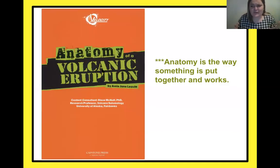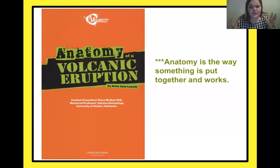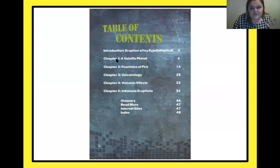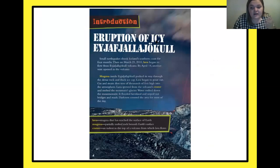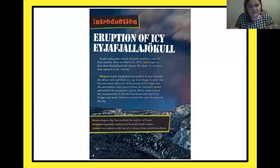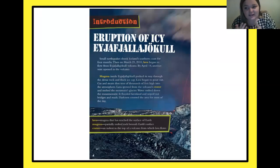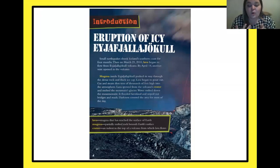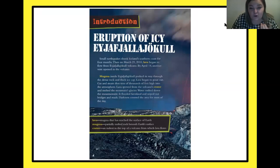So, anatomy of a volcanic eruption — what in the world does 'anatomy' mean? It is the way that something is put together and the way it works. So we're going to learn how a volcano erupts. Today we are starting with the introduction: 'Eruption of E' — that's a big Icelandic word. Here's a tip: when you get to big words you can't look up, use context clues. We know it's an eruption of something, so it's probably the name of a volcano, and like we already read, it's happening in Iceland. So this is just an Icelandic name. I could look it up, or I could just call it 'E' — using that first letter — because it's not going to change my understanding. I know it's a volcano and I know it's in Iceland.